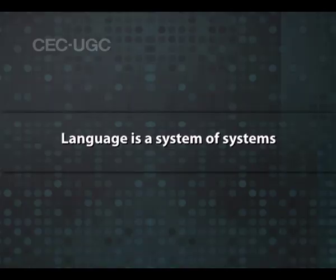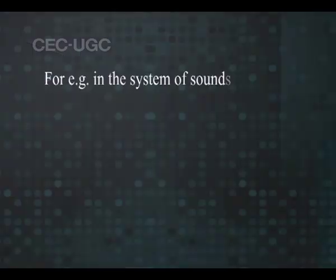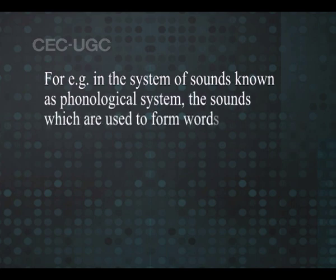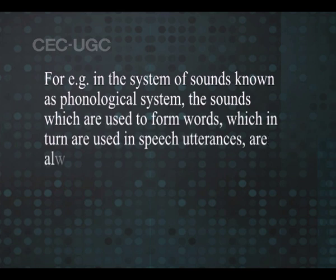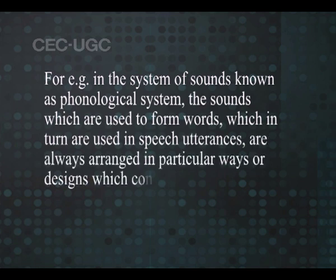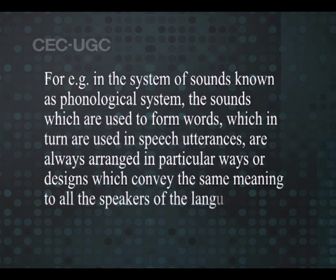Language is a systematic verbal symbolism which makes use of sounds, words and phrases arranged in certain ways to make sentences. Language is a system of systems. A system is a group of related parts working together. Every language operates within its system. Language has various systems within it and they are systems themselves. For example, in the system of sounds known as the phonological system, the sounds used to form words — which in turn are used in speech utterances — are always arranged in particular ways or designs which convey the same meaning to all the speakers of the language.